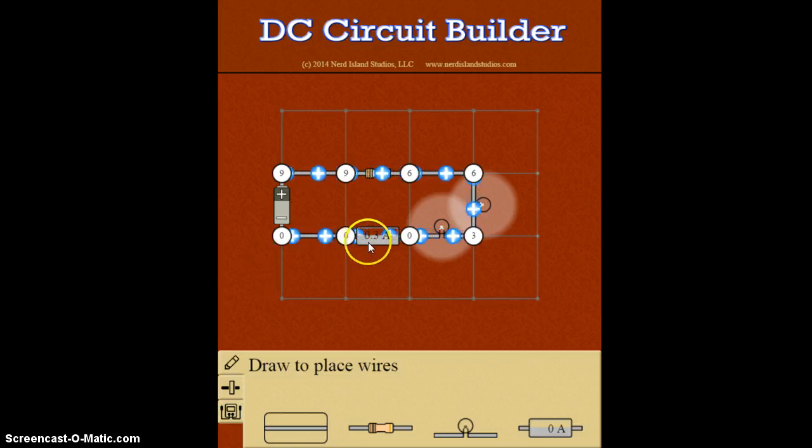In this case, I can see I have 0.3 amps flowing through this. If I have equal voltage drops, each of the resistance of these must be the same.